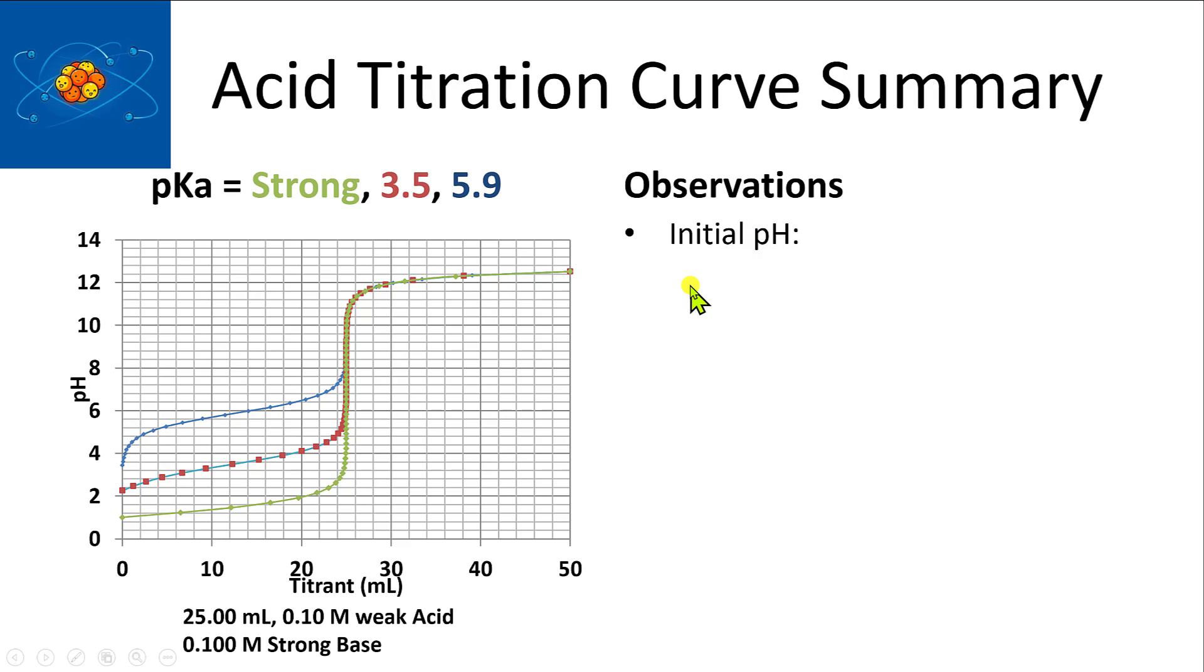For weak acids, initial pH depends on acid strength. Let me just say it depends on Ka or pKa. So stronger acids will have lower pHs at the start. Strong acids will have the lowest.